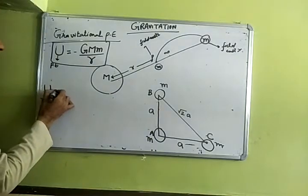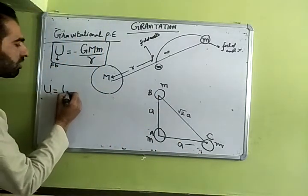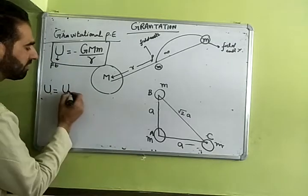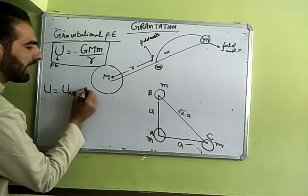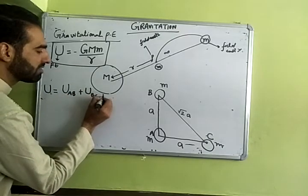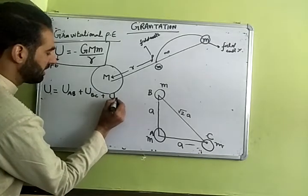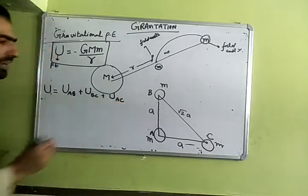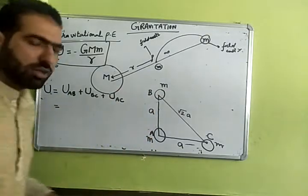So if you want to know the total gravitational potential energy of a system of three bodies here, what will you do? You will take gravitational potential energy of pair AB plus gravitational potential energy of pair BC plus gravitational potential energy of pair AC. Is that clear?